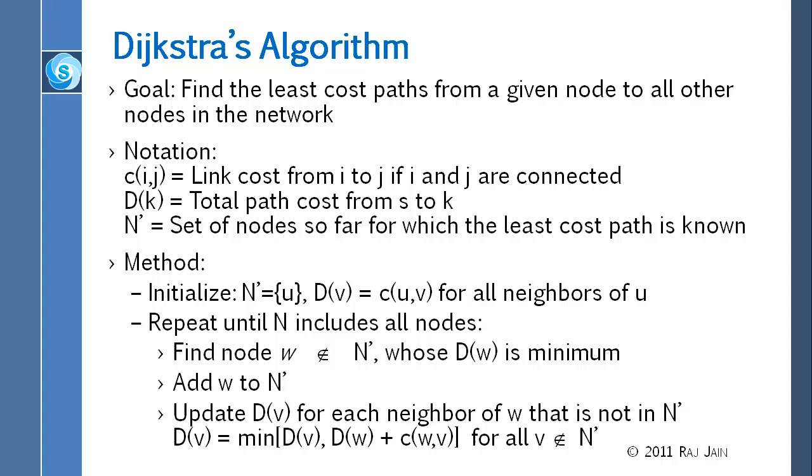This has to be listened very carefully, because this is in the homework and always in the exam. Our goal is to find the least cost path. The notation is that each link has a cost from i to j, C(i,j), and D(K) is the total path cost from S to K. N prime is the set of nodes for which the least cost path is known. In the beginning, N prime is just me.